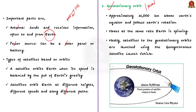The geostationary orbit is approximately 36,000 kilometers above Earth's equator and follows Earth's rotation. It is a circular orbit. A satellite in geostationary orbit travels from west to east over the equator, moving in the same direction Earth is spinning. From Earth, a geostationary satellite looks like it is standing still because it is always above the same location. Generally, satellites in geostationary orbit are used for telecommunication purposes and mobile signals.